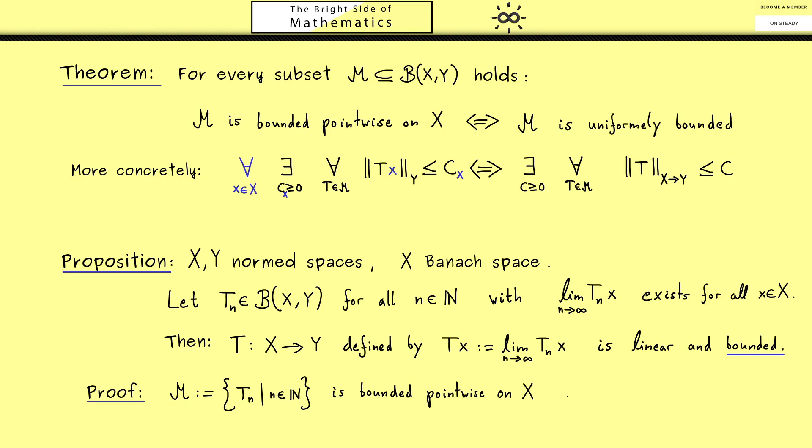Hence we are allowed to use Banach-Steinhaus, which means we find such a constant C on the right-hand side. So we have the constant C such that the operator norm of Tₙ is bounded by C for all n.